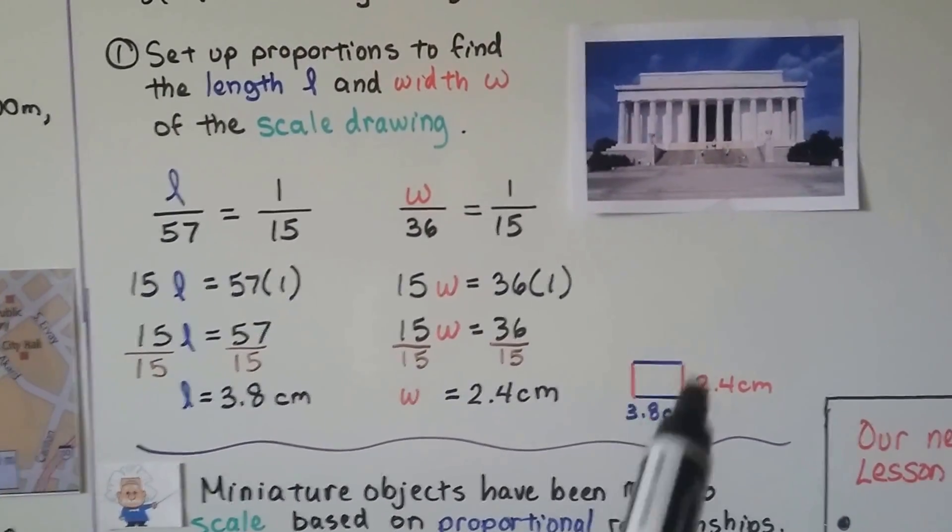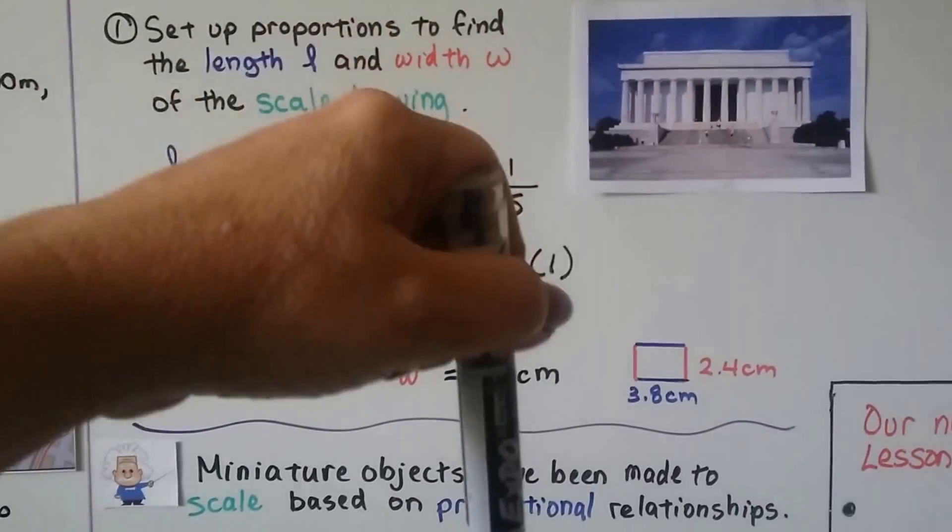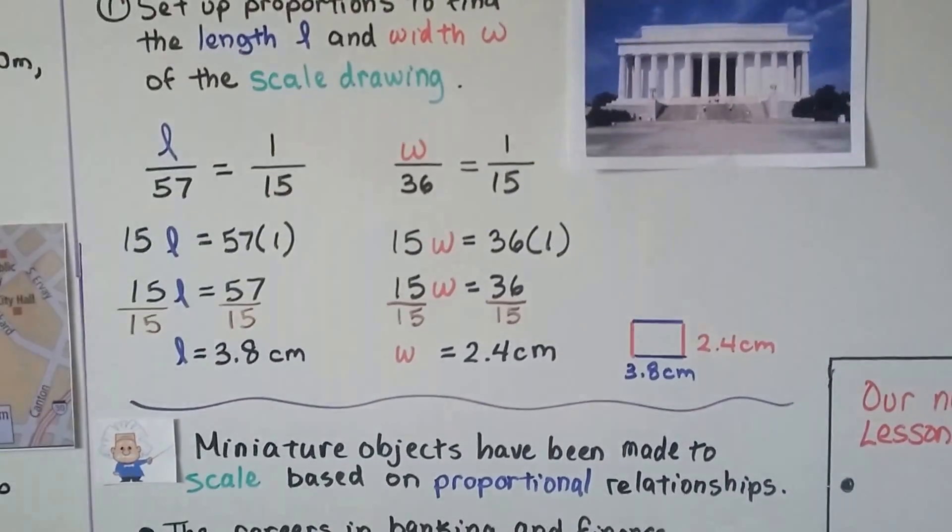So that would be our little scale drawing of the base of the Lincoln Memorial if you were looking straight down from the sky on it. That's what it's sitting on.